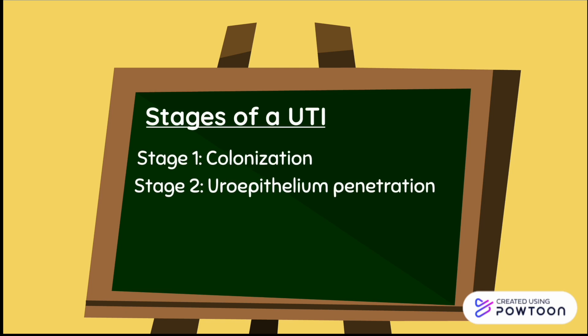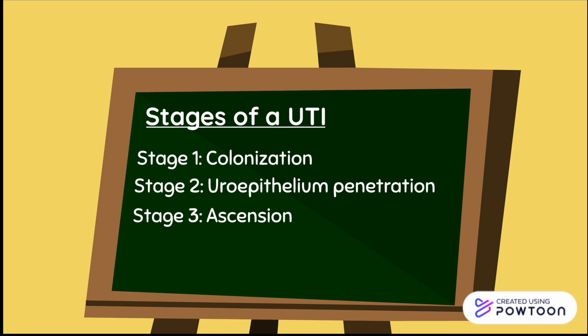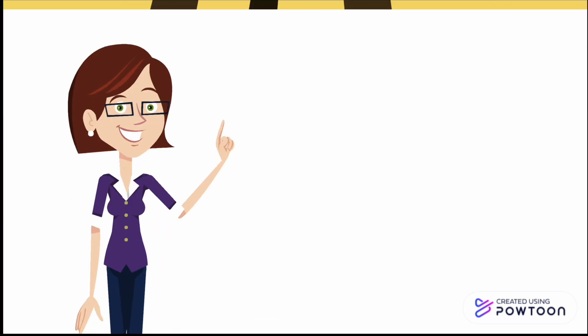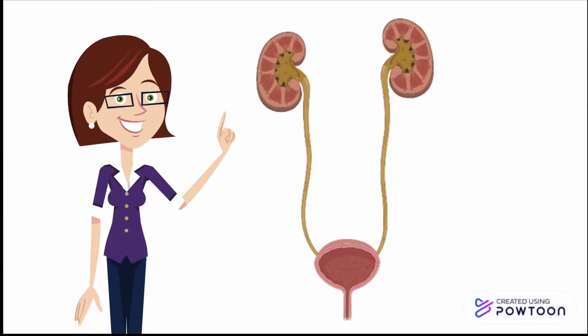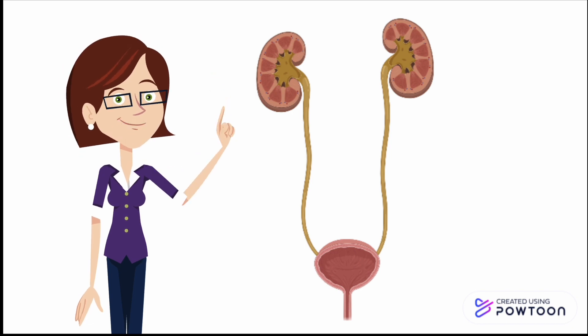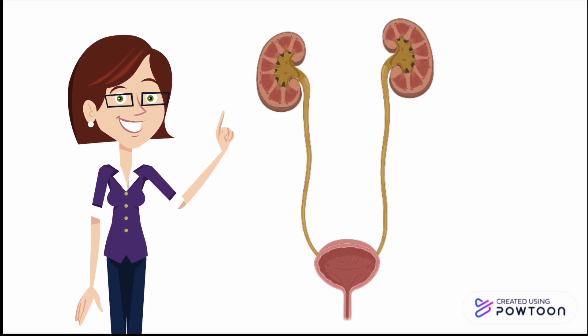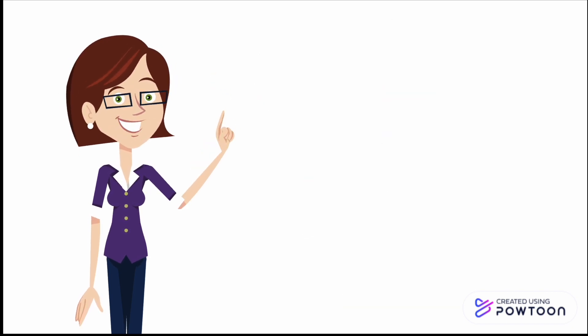The UTI can progress in five stages: colonization, uroepithelium penetration, ascension, pyelonephritis, and acute kidney injury. Here's a visual representation of the bacteria's path for you to better understand its mechanism of attack.